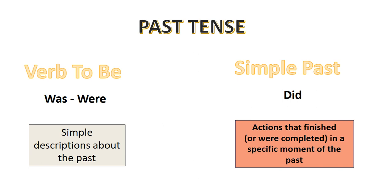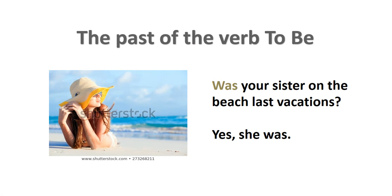Past tense — verb to be and simple past. It's important to clarify that we use this just when the main verb is the verb 'to be.' For simple descriptions about the past and actions completed at a specific moment: 'Was your sister on the beach on those vacations?' 'Yes, she was.' Here we are using verb to be — 'was' — and the subject is 'sister.'